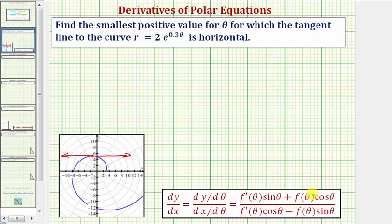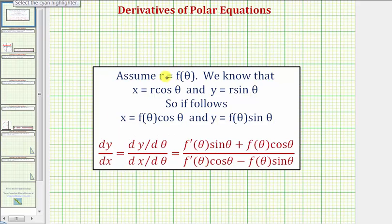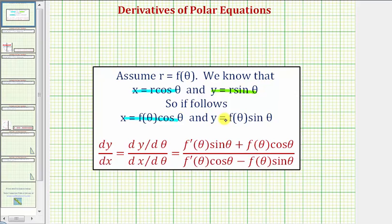Let's review where this comes from. Assume we have r equals f of theta, which means r is a function of theta. We know for polar coordinates, x equals r cosine theta and y equals r sine theta. But if r equals f of theta, we can write x as f of theta times cosine theta, and y equals f of theta times sine theta.